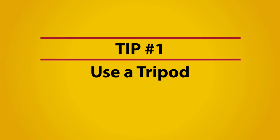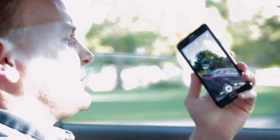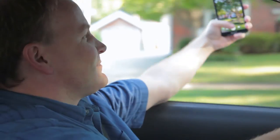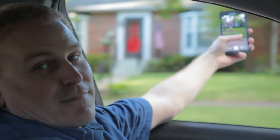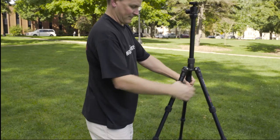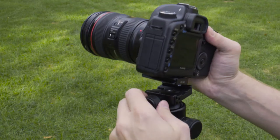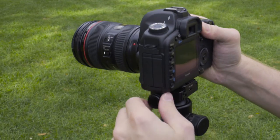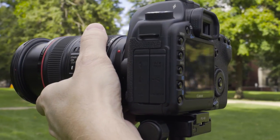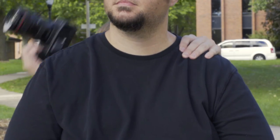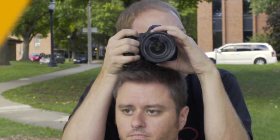Tip number one: if you're just snapping quick pics to share casually, you can probably get away with a cell phone. But if you want high-quality images that you can use in your marketing materials, then I highly recommend using a tripod to keep your pictures nice and stable. At the very least, prop yourself firmly against something for a wiggle-free shot.